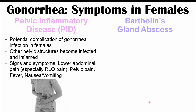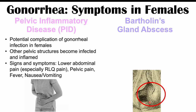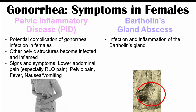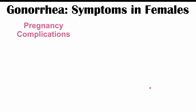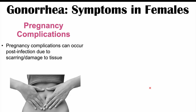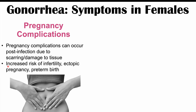Bartholin's gland abscesses can also occur, where gonorrheal organisms infect the Bartholin's gland, causing swelling that may obstruct the vaginal introitus. This can be very sore and painful, with fever in severe cases. Pregnancy complications associated with gonorrheal infection include increased risk of infertility, ectopic pregnancy, and preterm birth, often due to post-infection scarring and tissue damage.